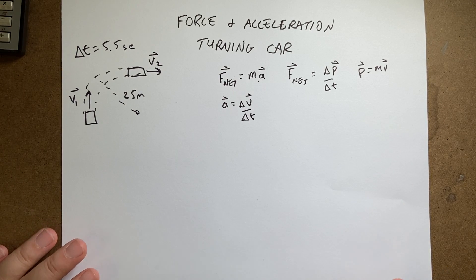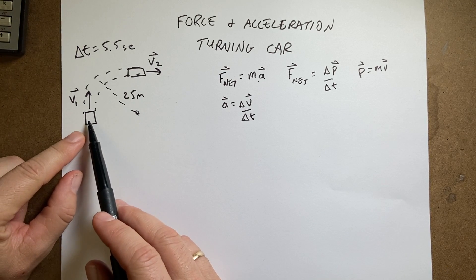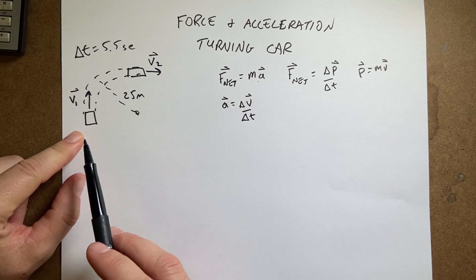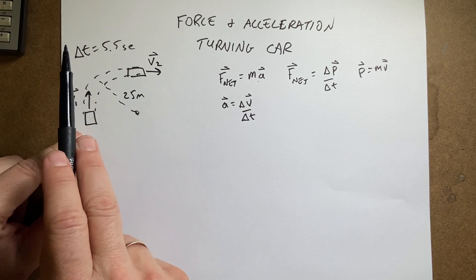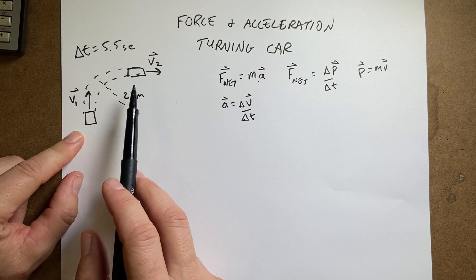Okay, so here is a practice problem. The situation is I have this car and we're looking at it from the top and it's going around this turn like that. So it starts off right here going north, you can call that north, and ends up going east.